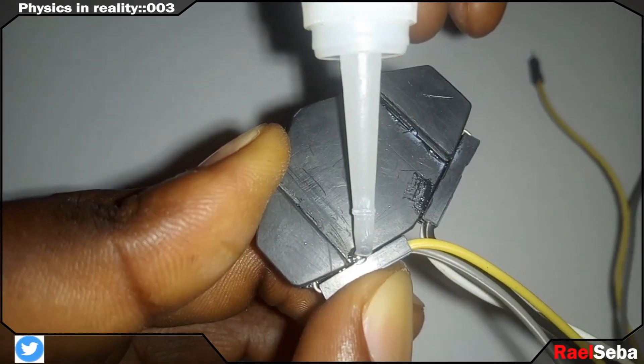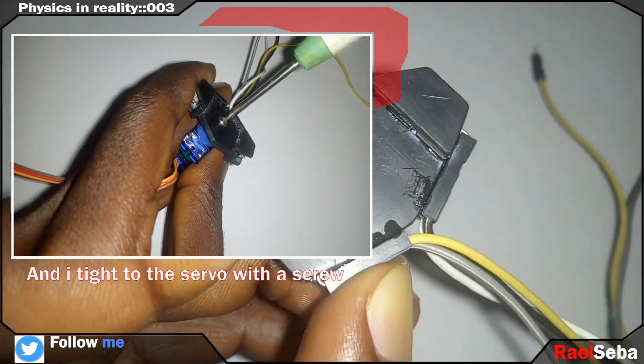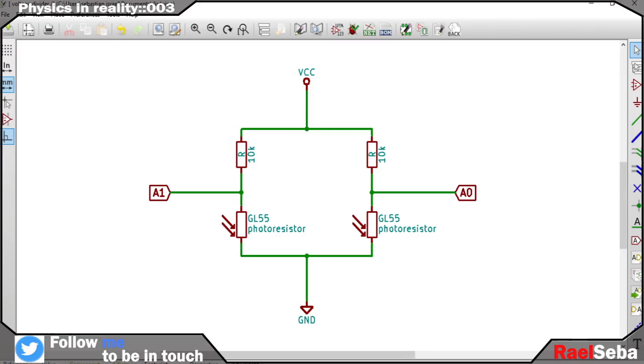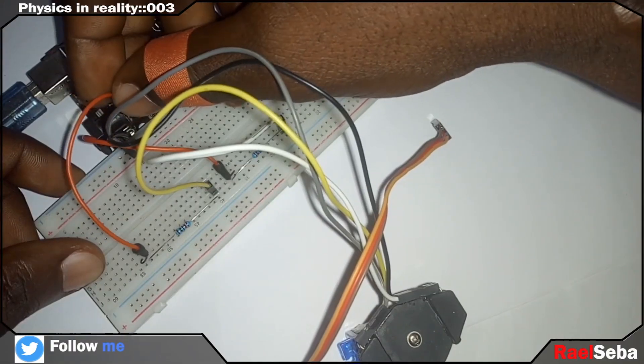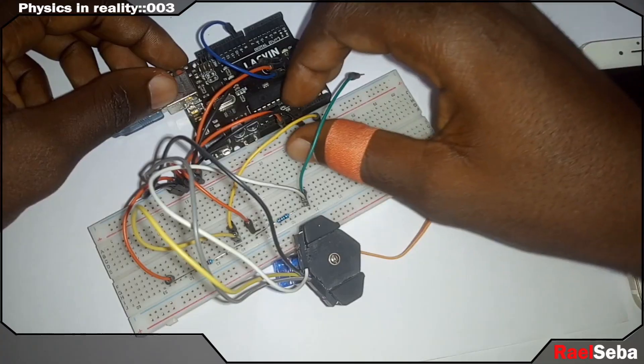After adding some wires to it, I then connect the photoresistors based on this circuit diagram on a breadboard and to the Arduino also. More about this in my first video.